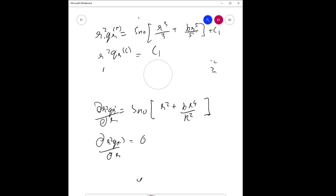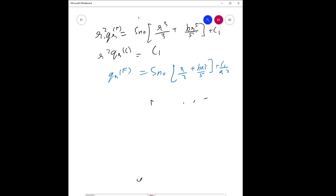Moving them to the other side: Q_R_F = S_n0(R/3 + BR^3/5) + C_1/R^2. Now let's use boundary conditions to find C_1 and this is C_1_F.